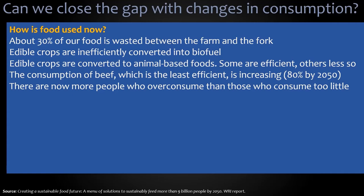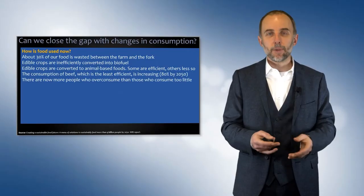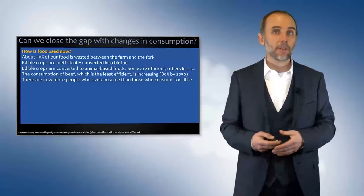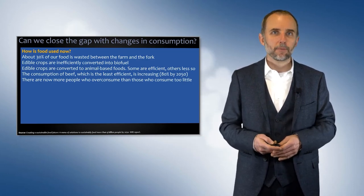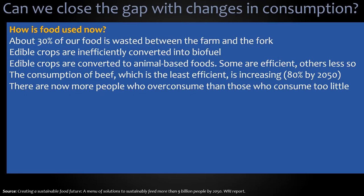We've also taken the decision that some of our crops are converted into biofuel — not to feed us, but to feed our cars, trucks, or airplanes. Edible crops are also converted into animal-based foods for livestock. Some of those conversions are quite efficient — aquaculture results in a lot of protein back, so that's quite efficient. But other conversions are not so efficient. The consumption of beef is the least efficient, and we know beef consumption and demand is increasing by 80% come 2050.